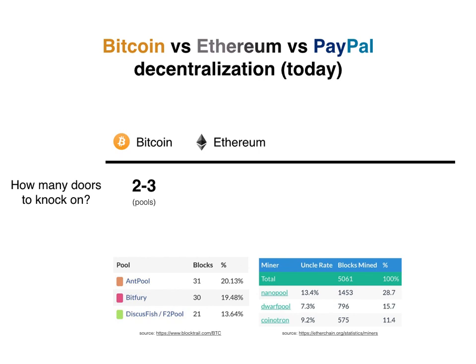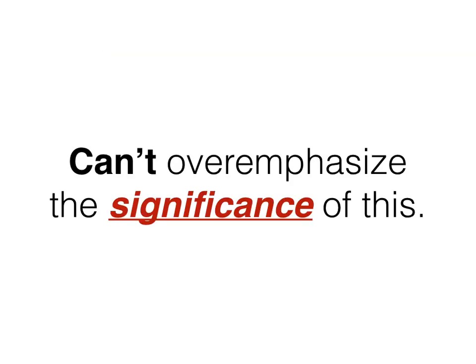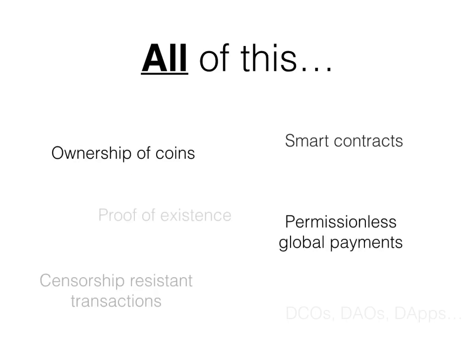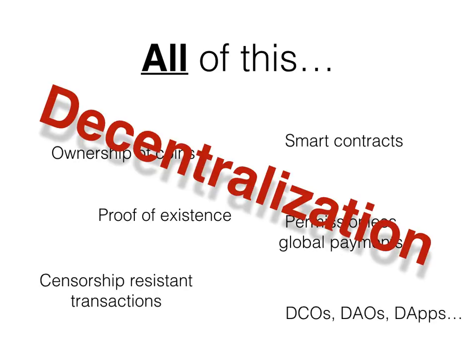That's about the number of pools you'd have to coerce in order to compromise the system — same goes for Ethereum. In the case of Bitcoin XT, we have an example where the development structure has a benevolent dictator, so there's only one person you would need to coerce to insert a backdoor and compromise it. The same applies to PayPal. I can't overemphasize the significance of this, because decentralization is the only thing distinguishing blockchains from the databases of old. All of the stuff that we love about blockchains goes out the window if the blockchain centralizes.